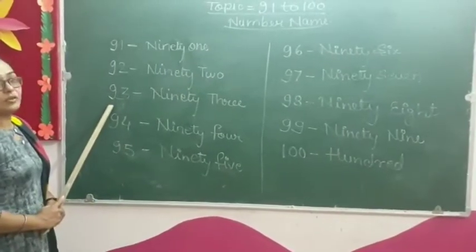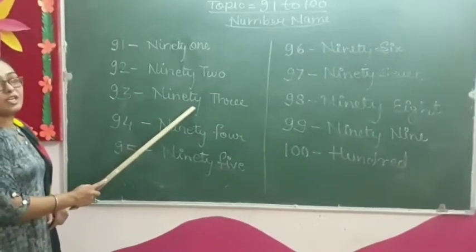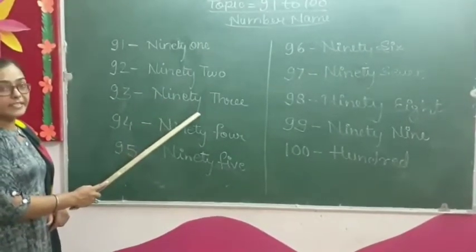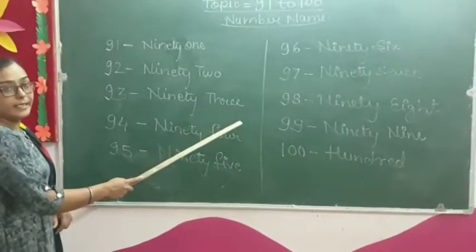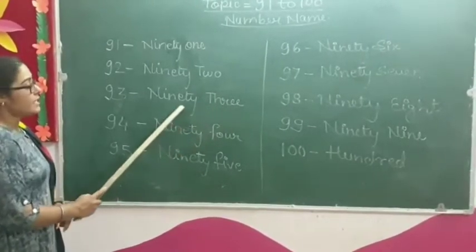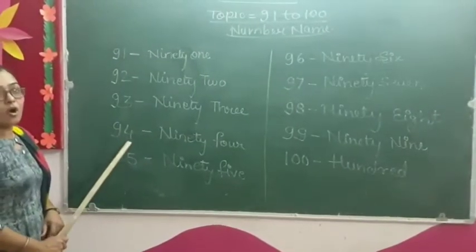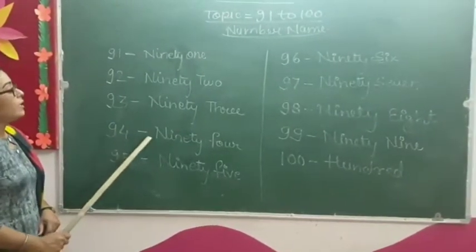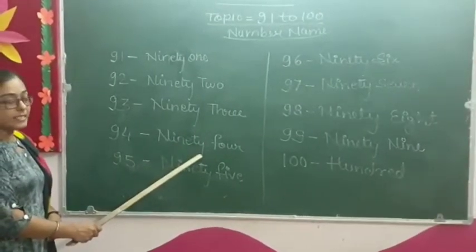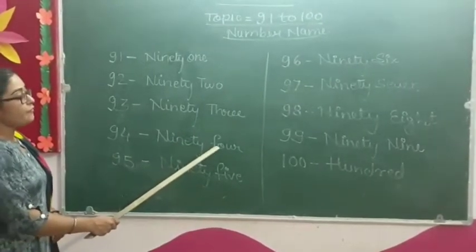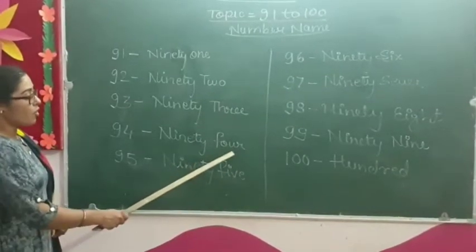Ninety-three. Ninety-four. N-I-N-E-T-Y — 90 — T-H-R-E-E — 3. Ninety-four. N-I-N-E-T-Y — 90 — F-O-U-R — 4. Ninety-four.